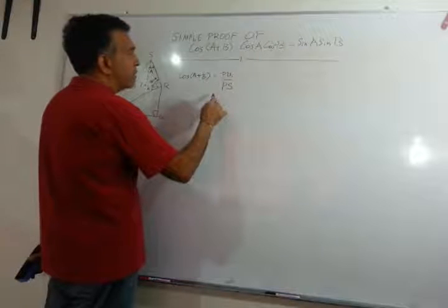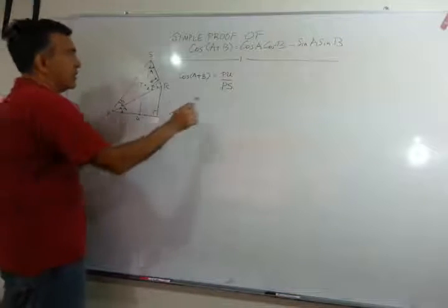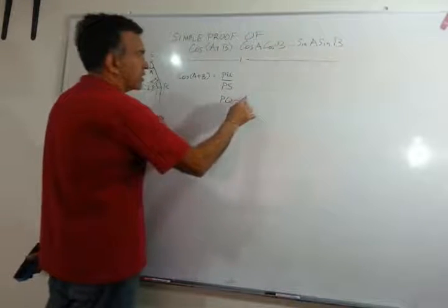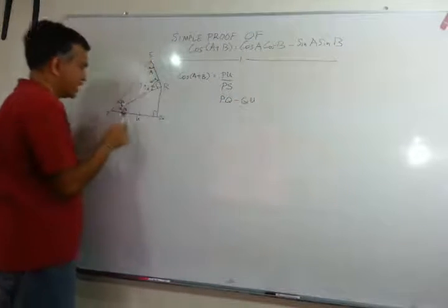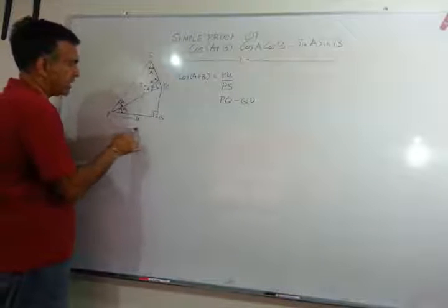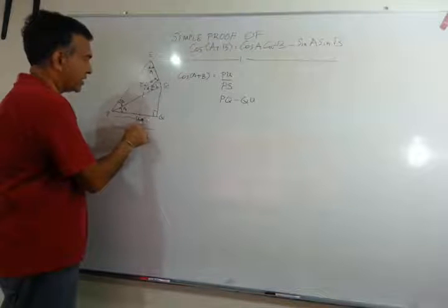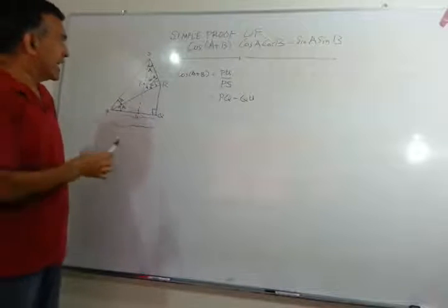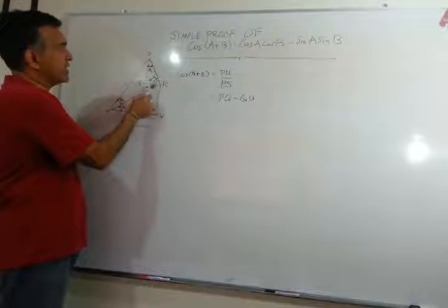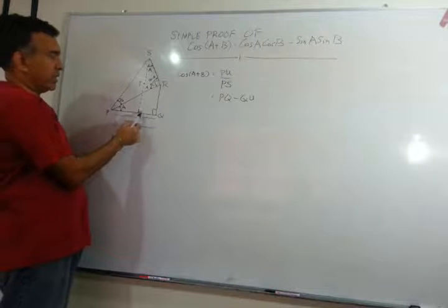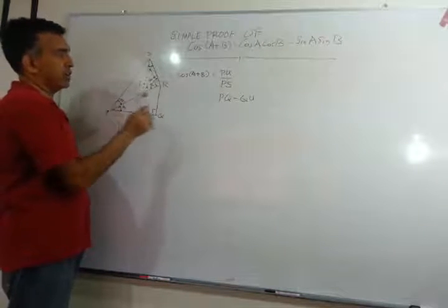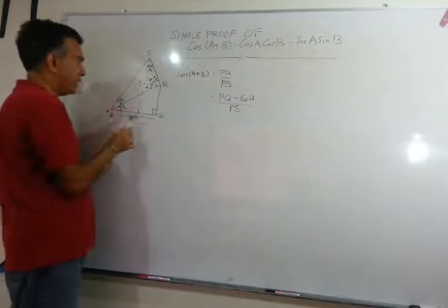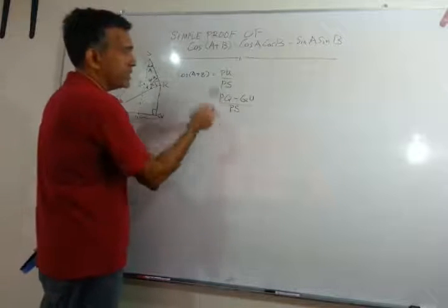So let's write PU in terms of PQ minus QU. So PU here is this whole thing, PQ minus this thing here. So far so good. Now, PU here is the same as TR, as you can see from my picture. So before that, let me write PS here at the bottom. So PU is PQ minus QU, and PS is here.